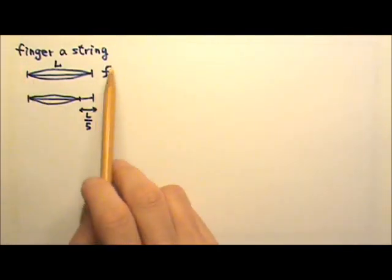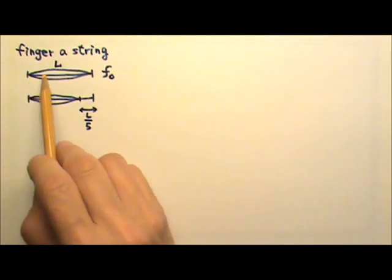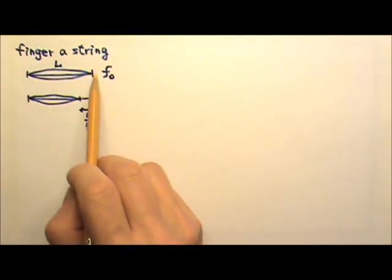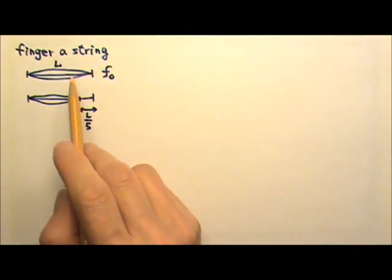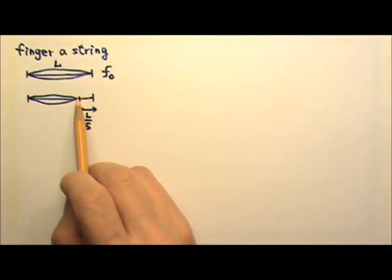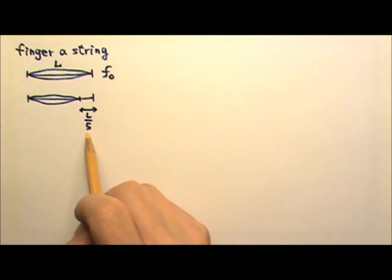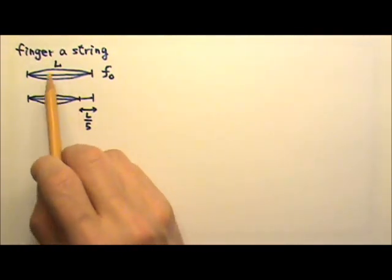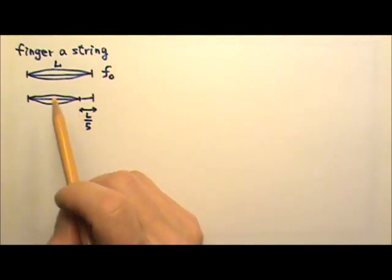We've done this fingering string problem. Let's say we have a string, the fundamental frequency when it oscillates in one loop, that's the main tone we would hear from that string. If we finger the string one-fifth way down, we're going to hear a higher tone because the length of a loop gets shorter.